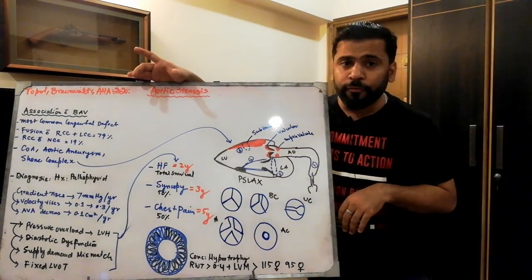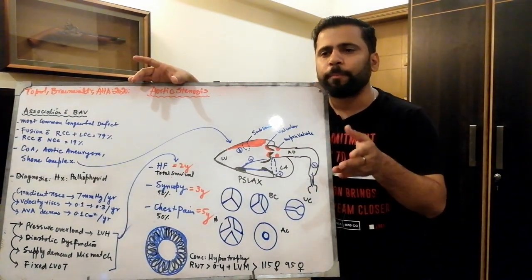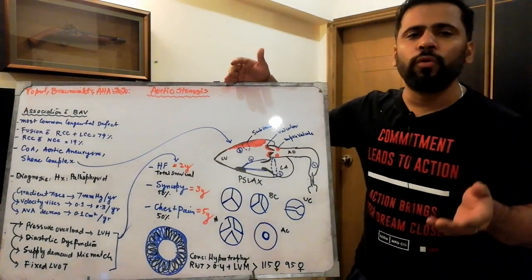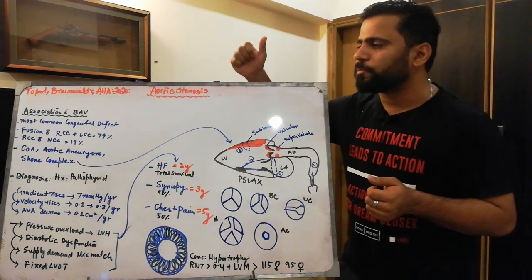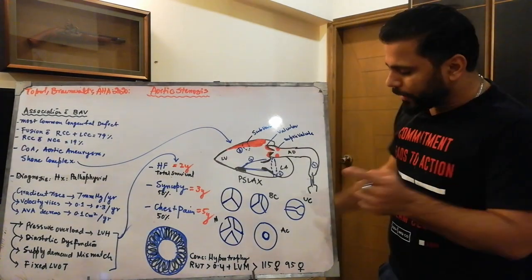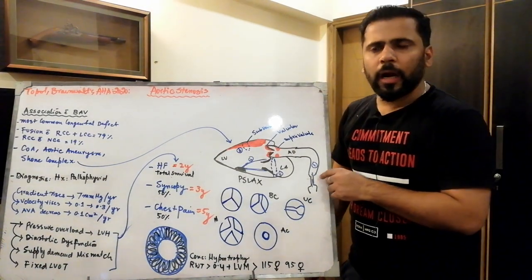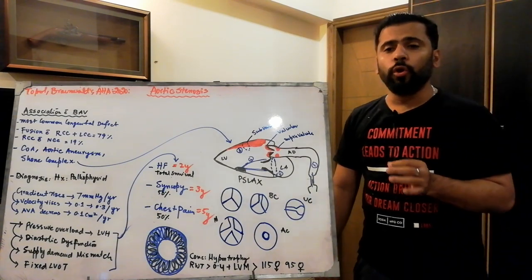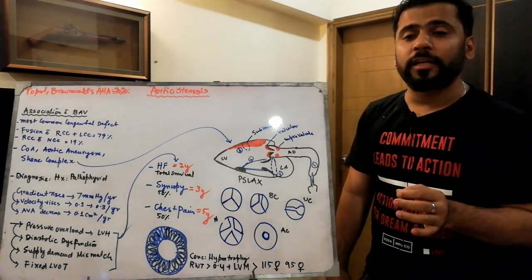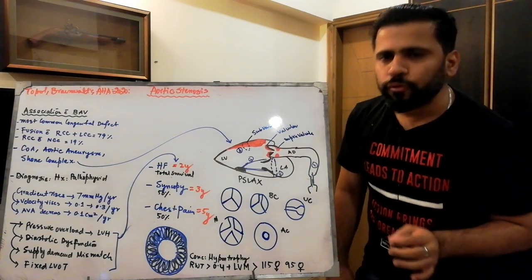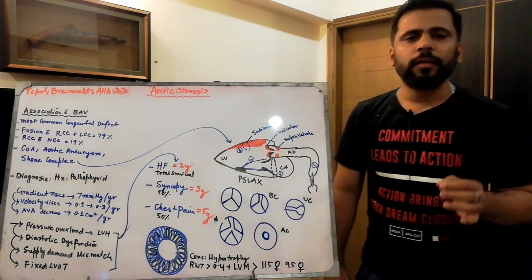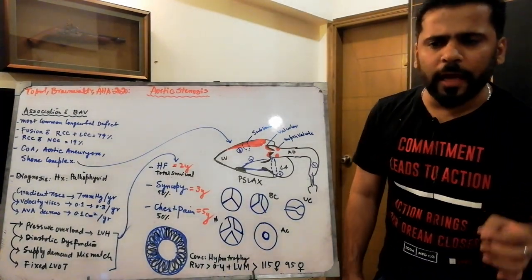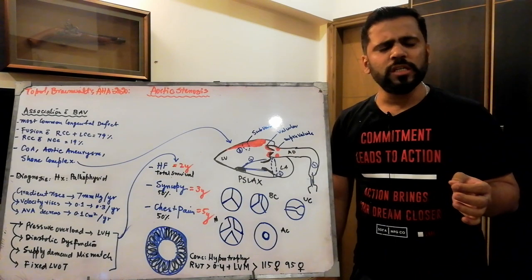If a patient presents with bicuspid aortic valve, you must look for other associated conditions. Around 80% of patients with bicuspid aortic valve will have coarctation of the aorta, so you must look for signs of coarctation and investigate with echocardiography, CT, or MRI.